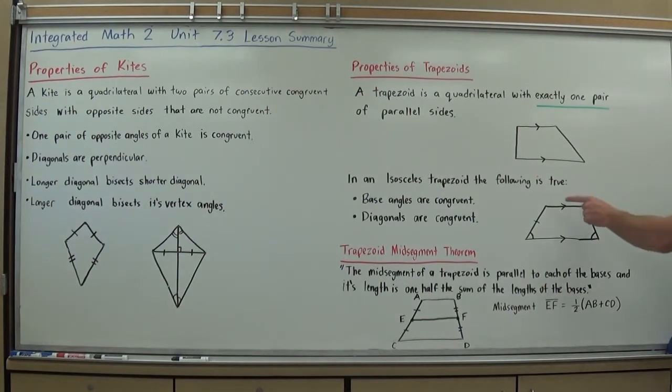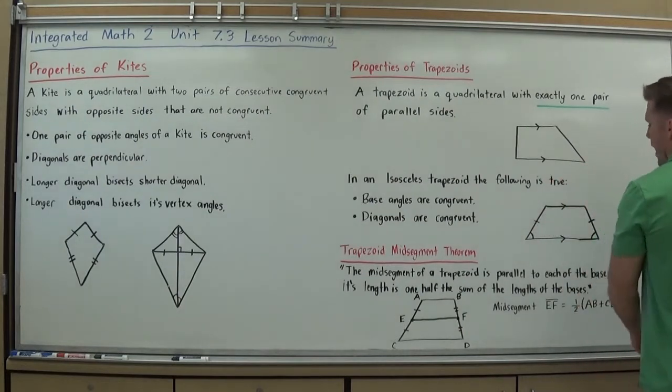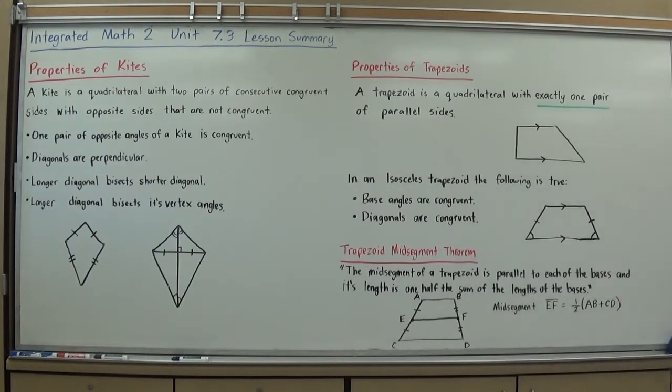If you take the one pair of parallel sides, again, those side lengths will be different, but as long as you make the opposite sides, the sides that are not parallel, the same length, you now have an isosceles trapezoid. Kind of like an isosceles triangle. If you took an isosceles triangle and just kind of cut it in half or cut a piece off of it, you would create this isosceles trapezoid.